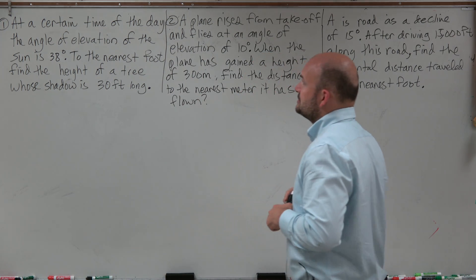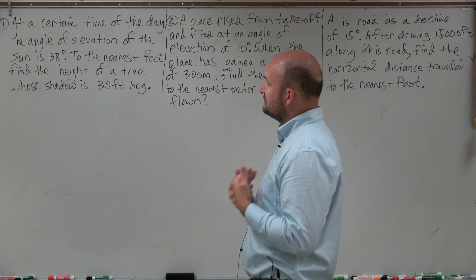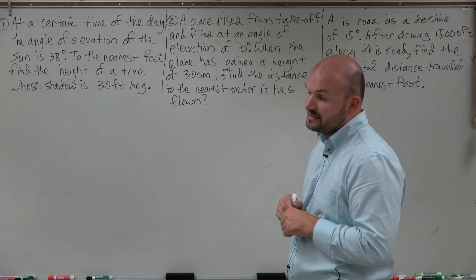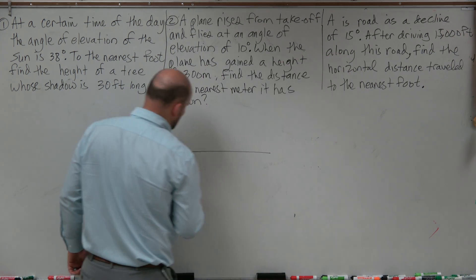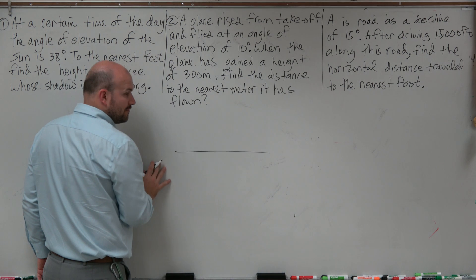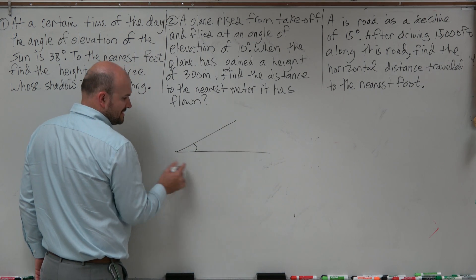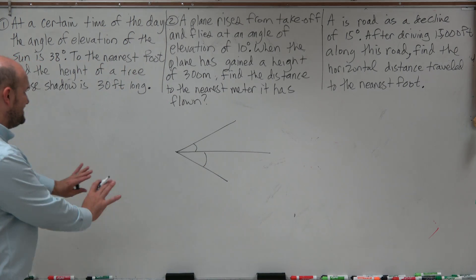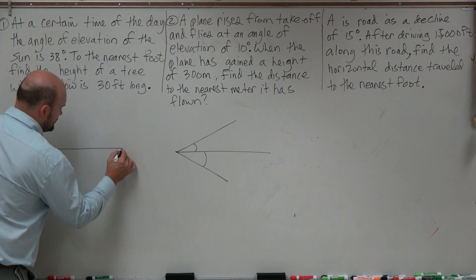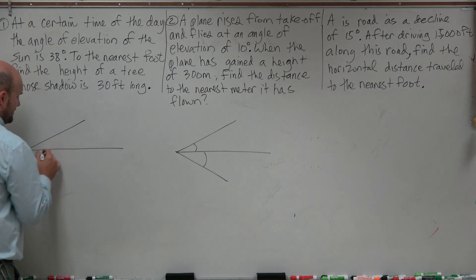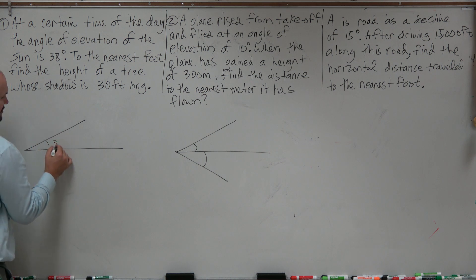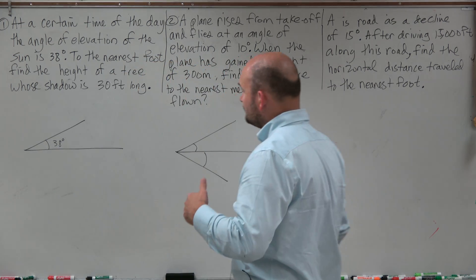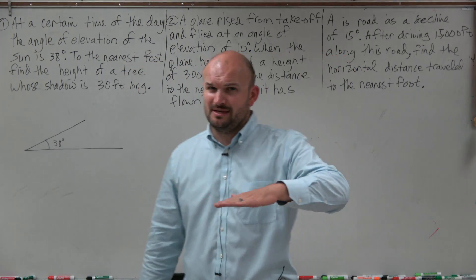The first problem says: at a certain time of day, the angle of elevation of the sun is 38 degrees. To the nearest foot, find the height of a tree whose shadow is 30 feet long. The angle of elevation is above your horizontal line, and the angle of depression is below it. So I'm going to create a horizontal line with an angle of elevation of 38 degrees.